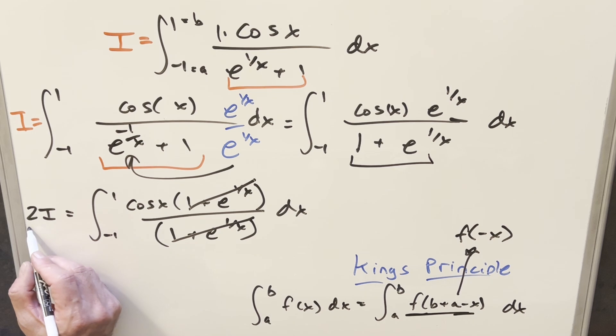One thing I can do before we continue is let's isolate what we want, which is our goal of I, divide by 2 here, and divide by 2 here.